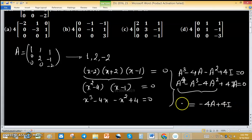This is 4I and 4I on the left-hand side. So the left-hand side becomes A⁴ - A³ - 4A² + 4I = -4A + 4I.